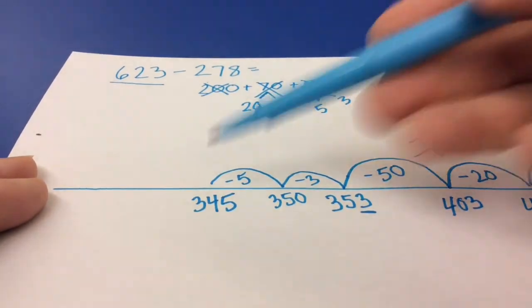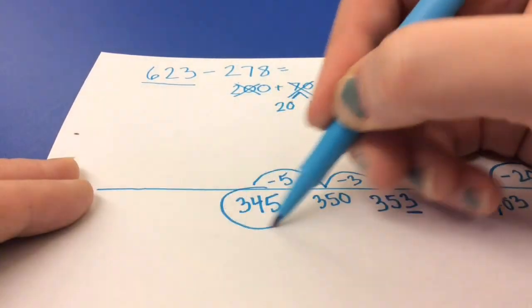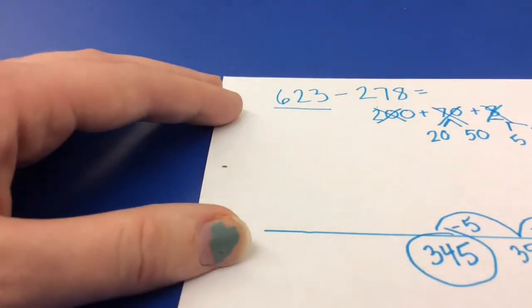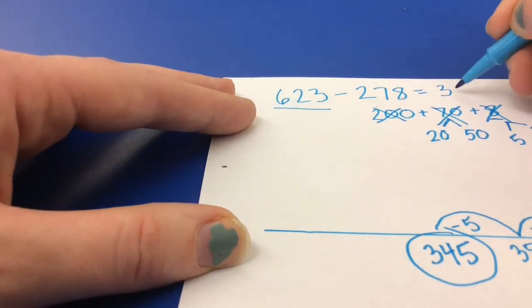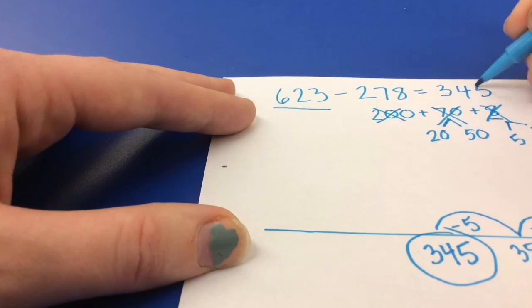Now that I've taken away all of my numbers, I now have my answer. So 623, take away 278, is 345.